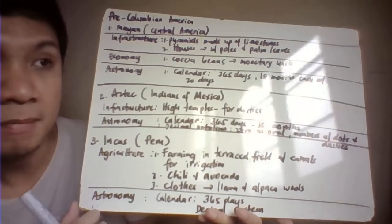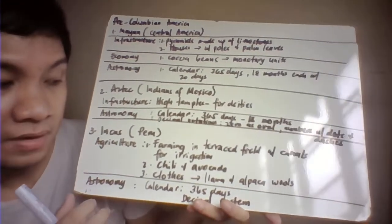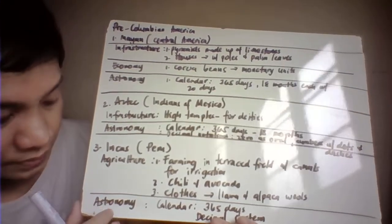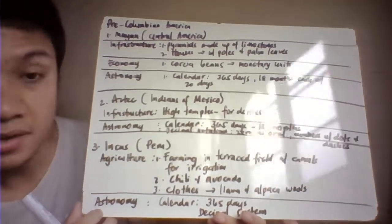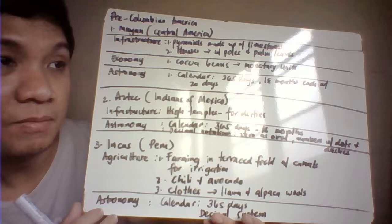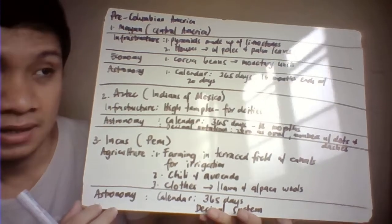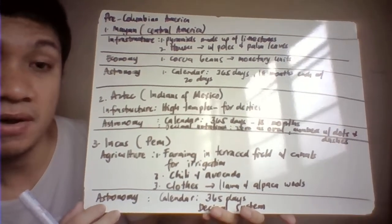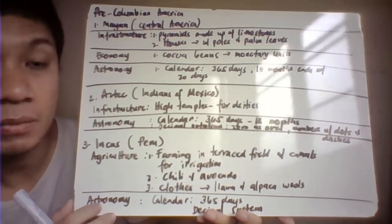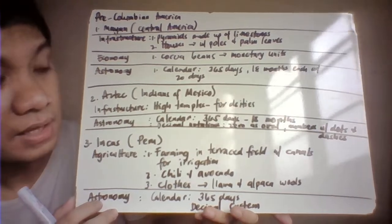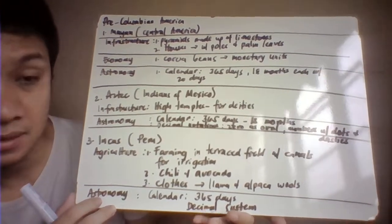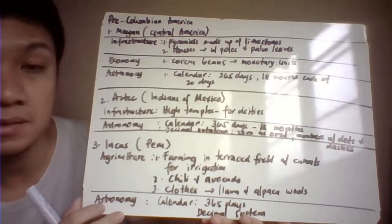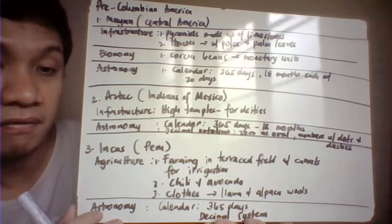For Inca astronomy, their calendar was also divided into 365 days with even months, and they also used a decimal system of notation.